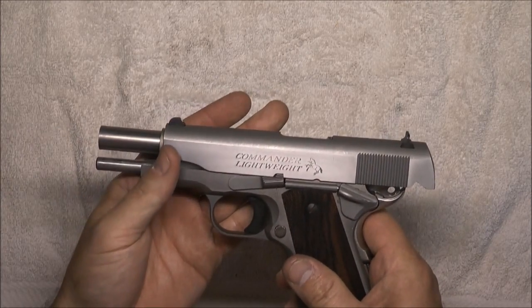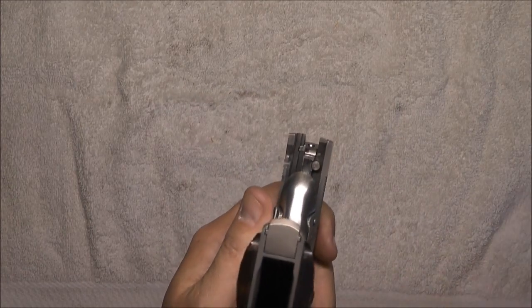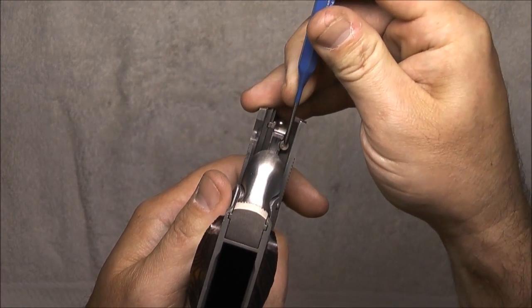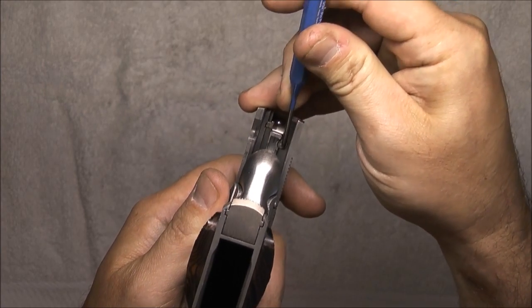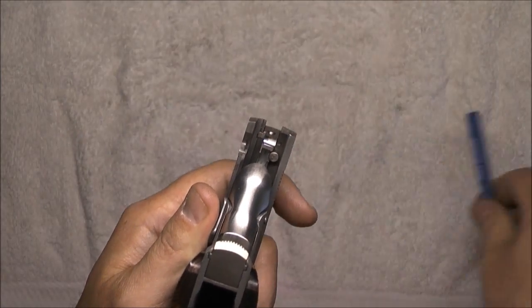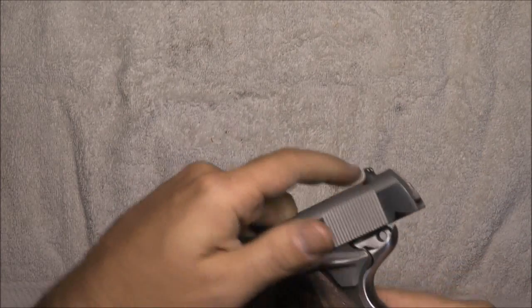While your slide is locked back, we'll flip it over and we're going to take a look right here. There's a little plunger, you see that plunger going up and down, that is actually the firing pin block, that's how we know that this gun is a Series 80.